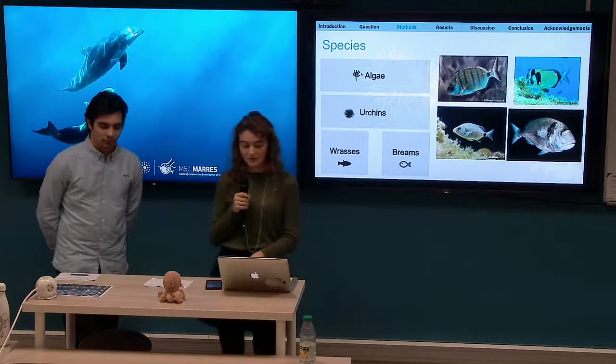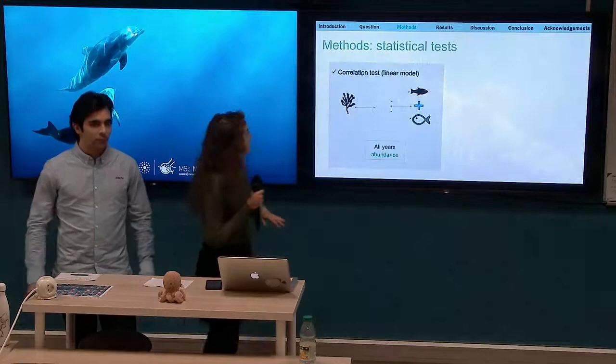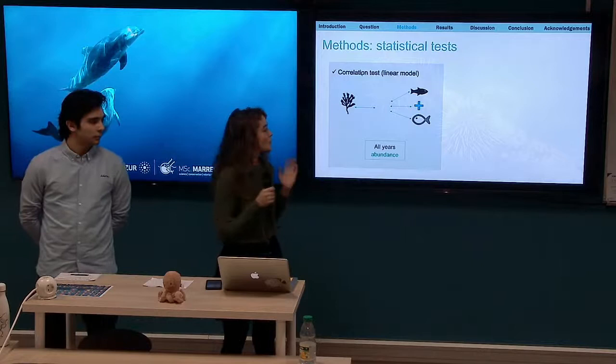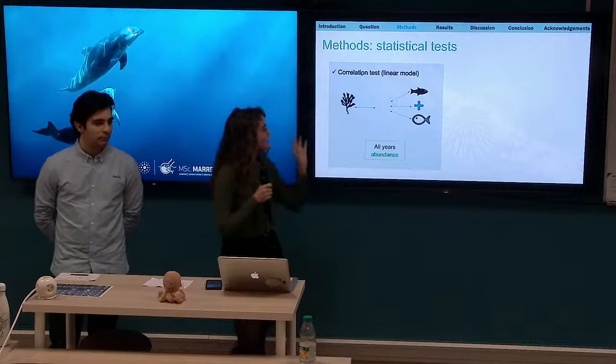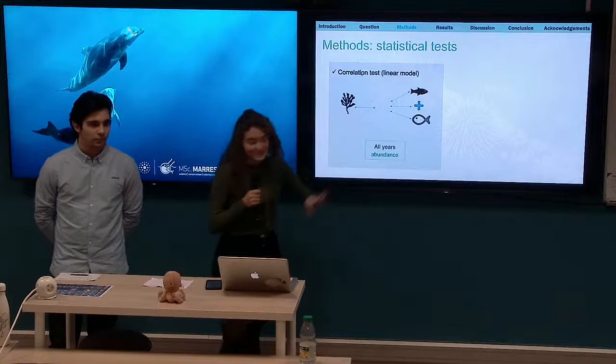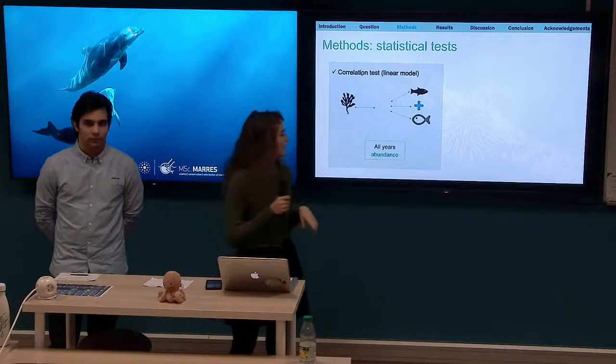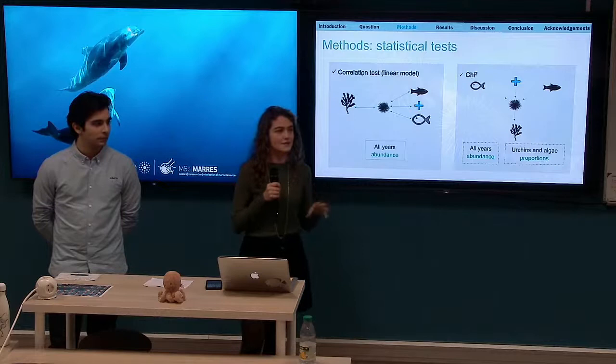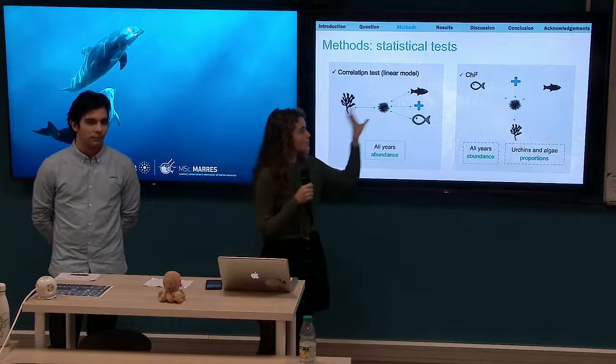For analysis, we performed correlation tests to assess whether there is a linear relationship between two variables — specifically between algae coverage and sea urchins, and between sea urchins and their predators, using all years' abundance data after removing some outliers. For checking non-linear links, we used a chi-square test to see if a group of frequencies follows a distribution — whether predators followed the sea urchins' distribution and whether sea urchins followed the algae distribution.